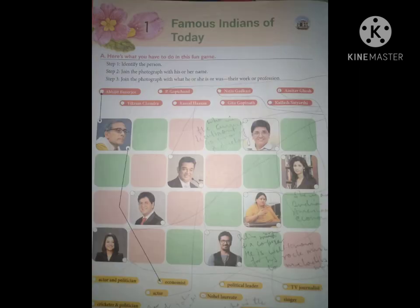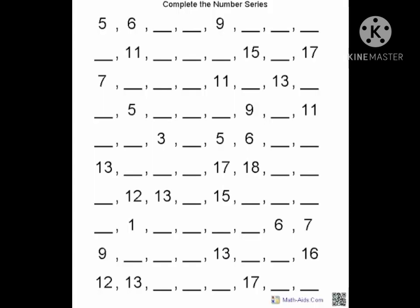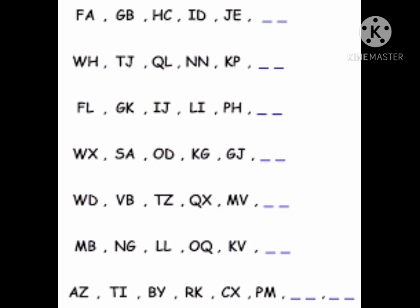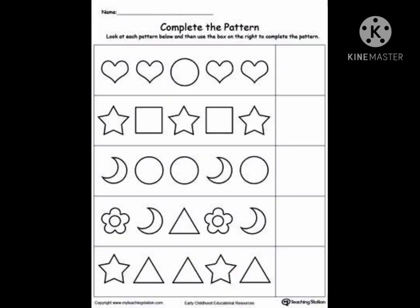From book term 2, chapter number 1 is, famous Indians of today. In this chapter, you learnt about different famous personalities of India and about their professions. In this chapter, you need to revise the content given in the book and watch its video. Next topic is, from aptitude, series and patterns. In this, you need to practice alphabet series, number series and patterns.